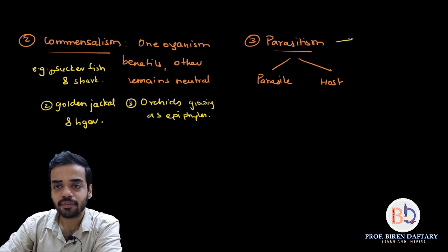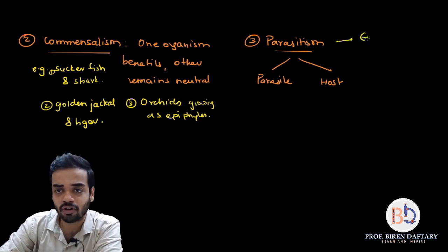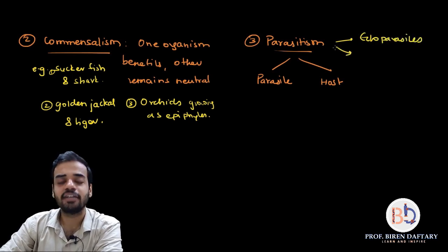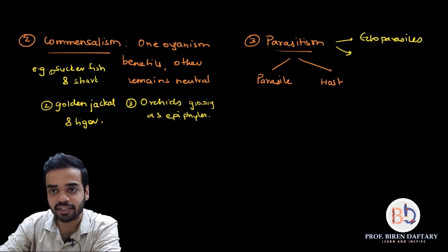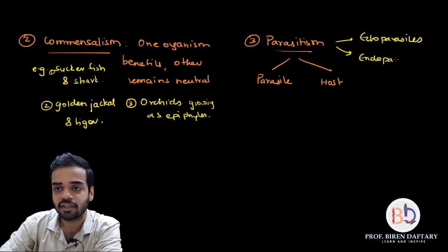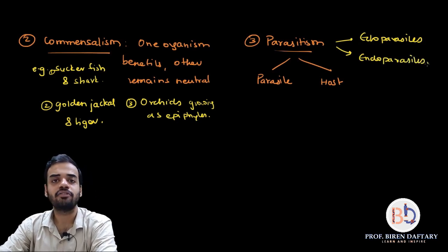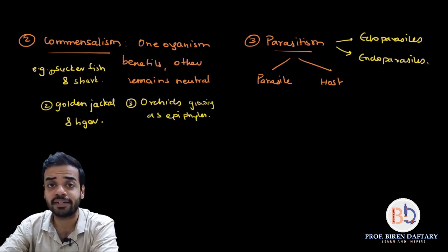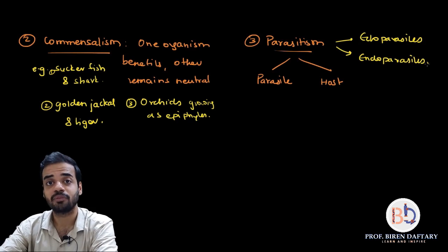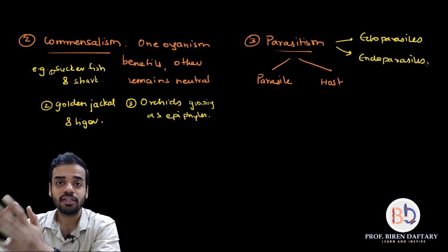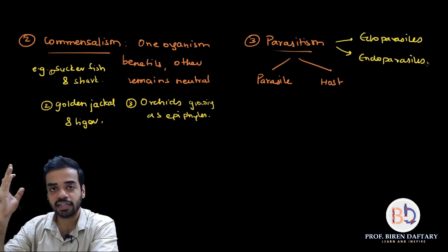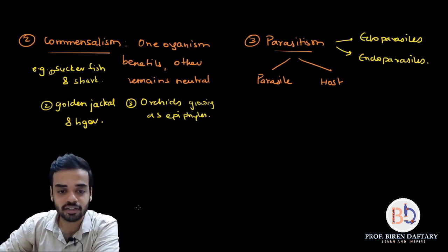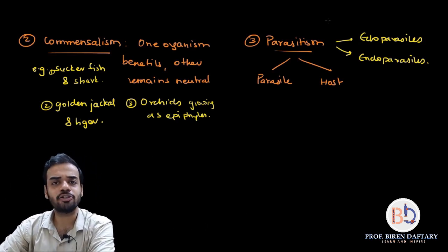Parasites are of two types. Parasites present outside the body are called ectoparasites — for example, the mosquito is an ectoparasite. Parasites present inside the body are called endoparasites — for example, Plasmodium is an endoparasite. Any virus or bacterium that enters your body is an endoparasite. A leech that sucks blood is an ectoparasite because it attaches to your skin from the outside.